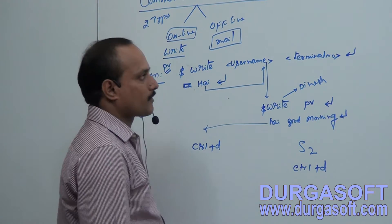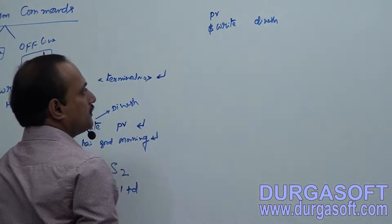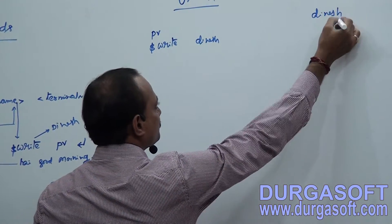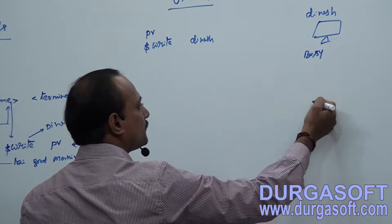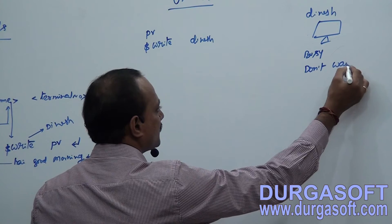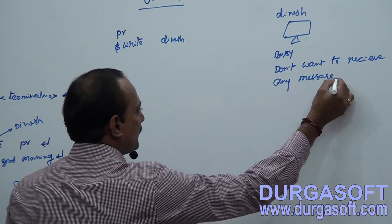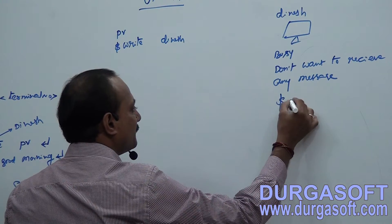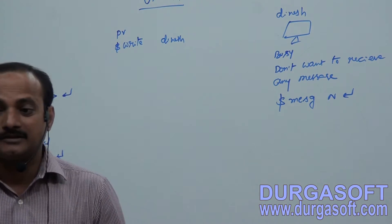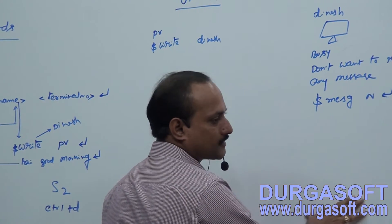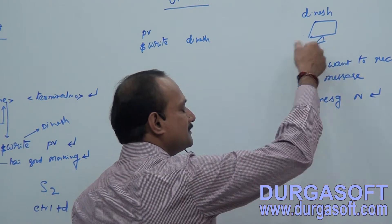Suppose PV is trying to initiate a write command to Dinesh, but Dinesh is very busy and does not want to receive any messages while working. Then Dinesh has to initiate the command 'mesg n' and press enter. This means 'I don't want to receive any messages.' This request is sent to the Unix server, which will not allow any other person to send messages to Dinesh.